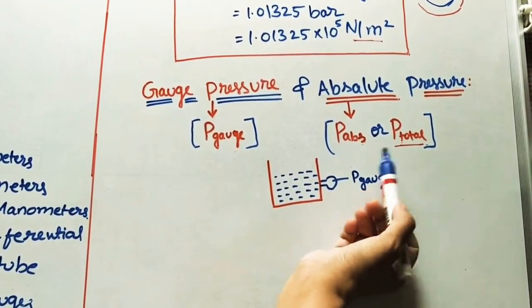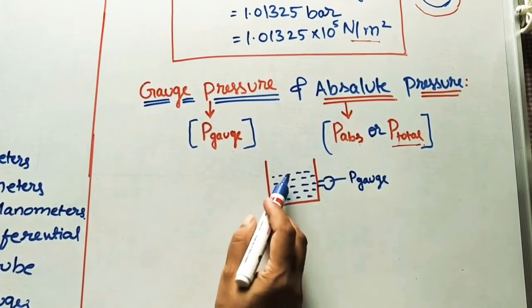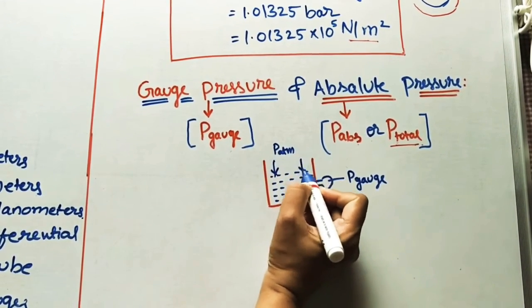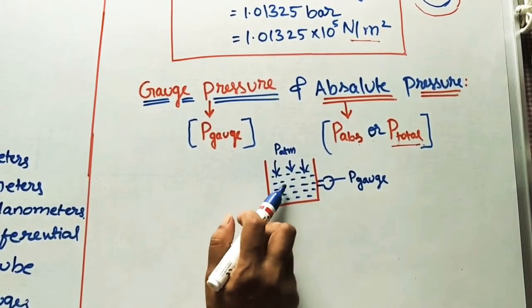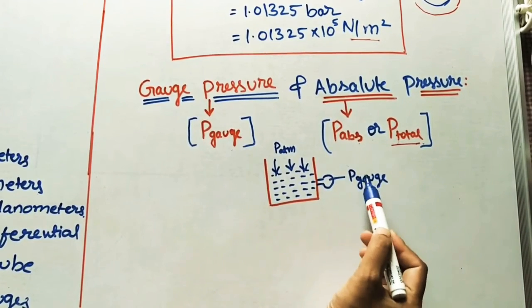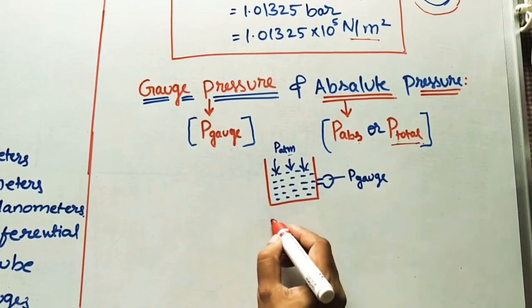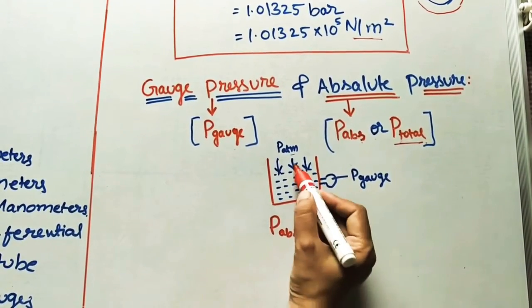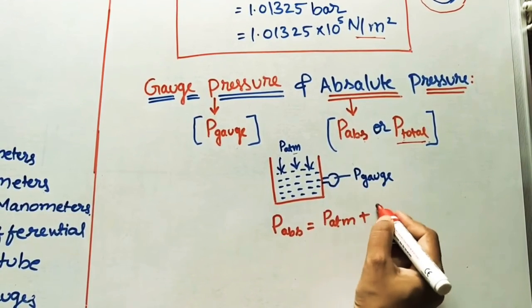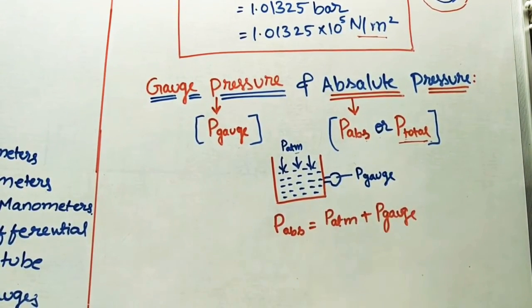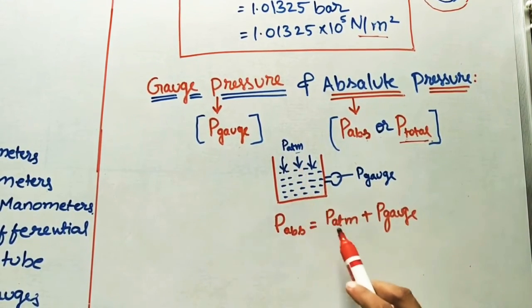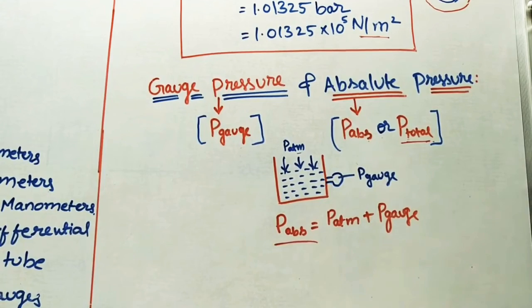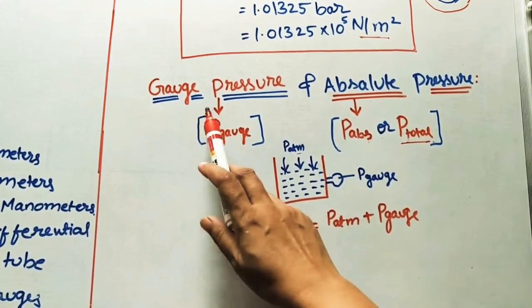Absolute pressure means the total pressure acting on the liquid. The liquid is surrounded by air, so it is subjected to atmospheric pressure P_atm. The liquid is therefore subjected to two pressures: the liquid gauge pressure P_gauge and atmospheric pressure P_atm. The total pressure is called P_absolute or P_total, and is given by: P_absolute = P_atmospheric + P_gauge.